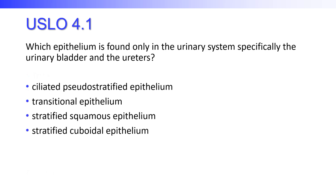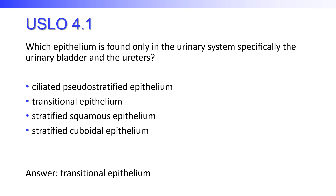Which epithelium is found only in the urinary system, specifically the urinary bladder, a bit of the ureters and maybe even a little of the urethra? That would be transitional epithelium.